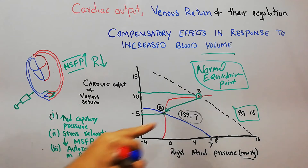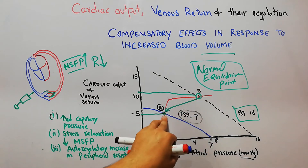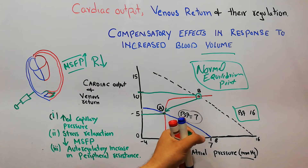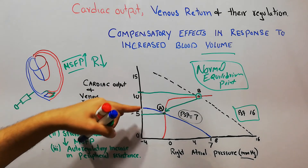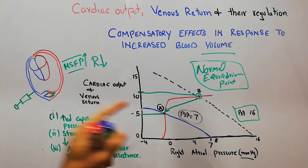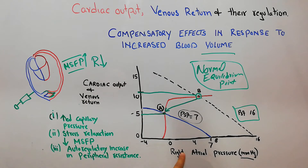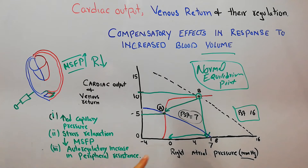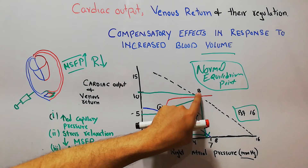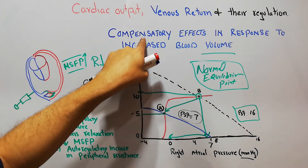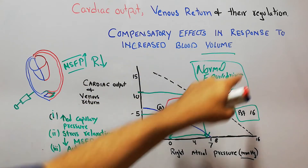How will the body bring the mean systemic filling pressure from 16 back down to the normal 7, and bring the cardiac output and venous return from more than 10 L/min back to normal, and bring the right atrial pressure back to the normal zero level? The body will initiate three main compensatory effects.